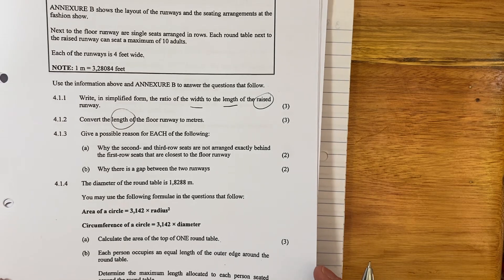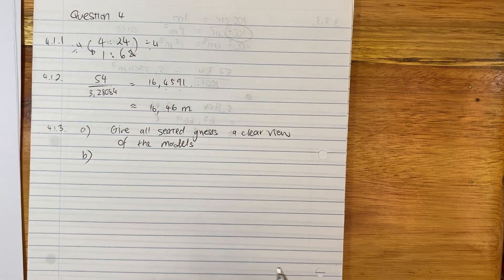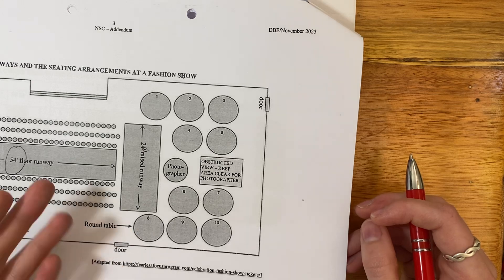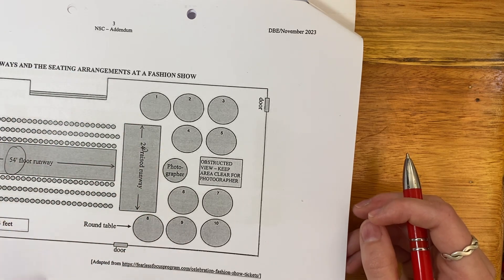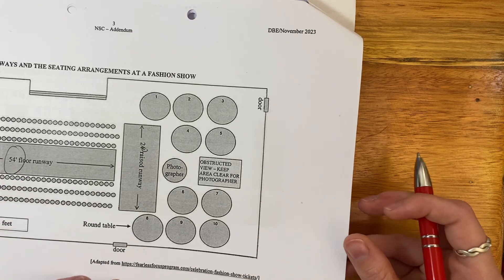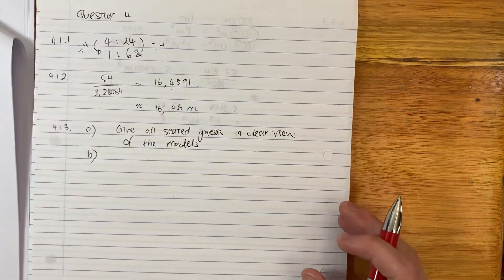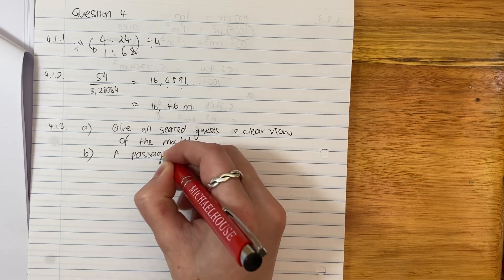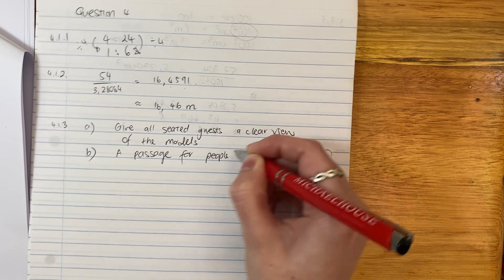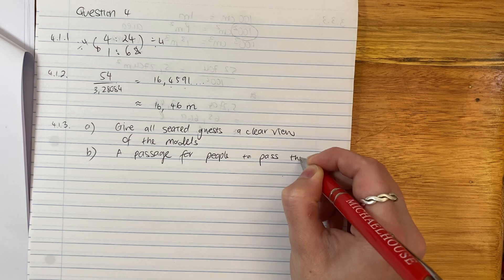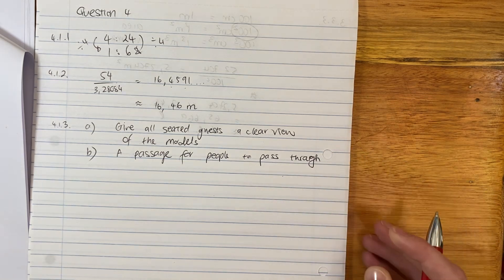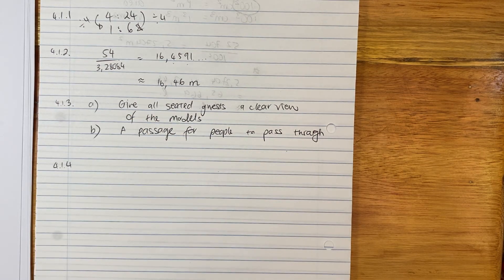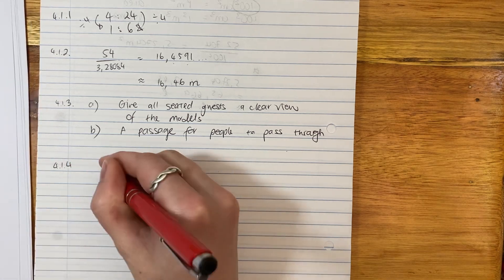Why is there a gap between the two runways? Well, one runway is raised and the other one is not. So it makes sense to have a gap. It also means that it's easy to walk around. I'm going to say it's a passage for people to pass through. That's not too difficult. Now we get into a little bit of a meatier section.